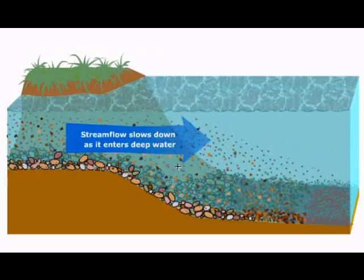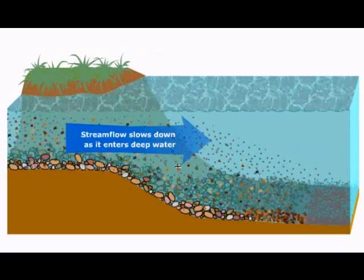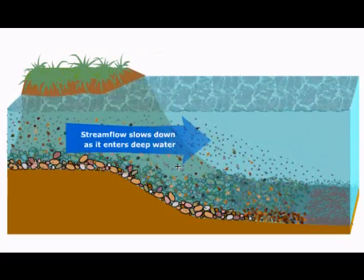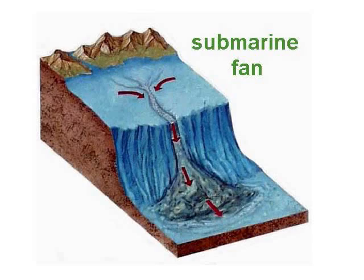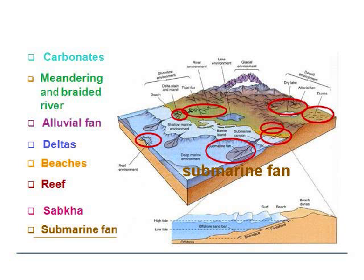As we described earlier, weathering and erosion cause sediment to be transported to the oceans. There, at places, this sediment builds up at the ocean's edge where it creates a continental shelf. Eventually, the weight of this sediment shifts, causing landslides that form submarine fans. Finer sediments are found on the outer fan edge.